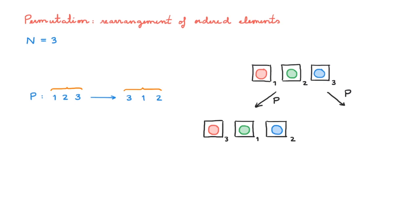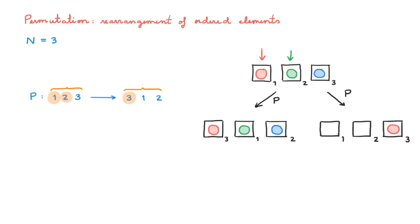We can view this same permutation from a different point of view, in which we rearrange the balls rather than the boxes. Let's start by insisting that the three boxes are ordered 1 to 3. In this language, the first entry tells us to take the ball in box 1, the red one, to box 3. Then the second entry tells us to take the ball in box 2, the green one, to box 1. And the third entry tells us to take the ball in box 3, the blue one, to box 2. These two interpretations of a permutation are entirely equivalent. You can see how at the end, box 1 has the green ball, box 2 has the blue ball, and box 3 has the red ball in both cases.